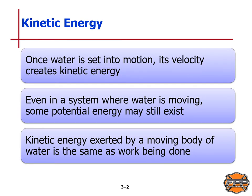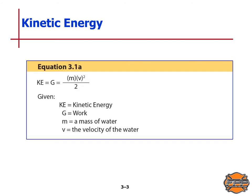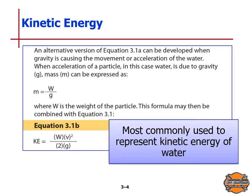Once water is set in motion, its velocity creates kinetic energy. Even when water is moving, some potential energy may still exist. Kinetic energy exerted by a moving body of water is the same as work being done. The formula — labeled in your text as Equation 3.1 alpha — is: KE (kinetic energy) equals work equals mass of water times velocity squared divided by 2. This formula is most commonly used to represent kinetic energy of water when gravity is causing the movement or acceleration.